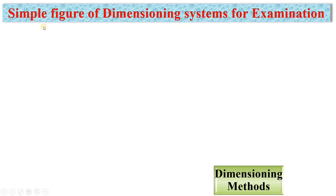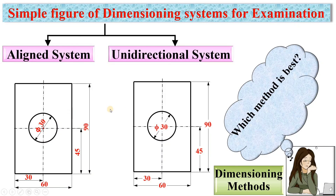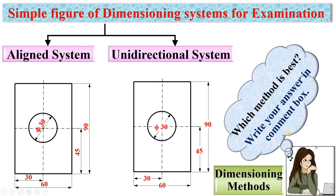For the examination, you can use this simple figure. The key visual difference is that in the aligned system, vertical dimensions like 45 or 90 are read from the right side, whereas in the unidirectional system all dimensions must be read from the bottom only. Which method is best — aligned or unidirectional? Write your answer in the comment box. Thanks for watching, and press the like button to appreciate the video.